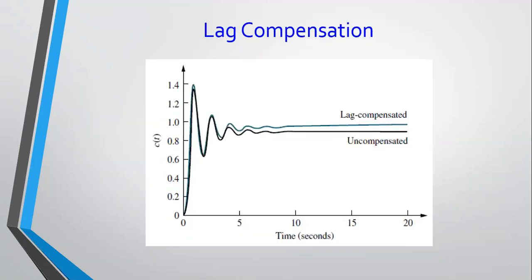This is the section on lag compensator. It was a short section, more or less very similar to a PI controller, but the main difference is that your pole is not placed at the origin but very close to the origin. And of course, you need to place a zero as well to maintain the transient response.